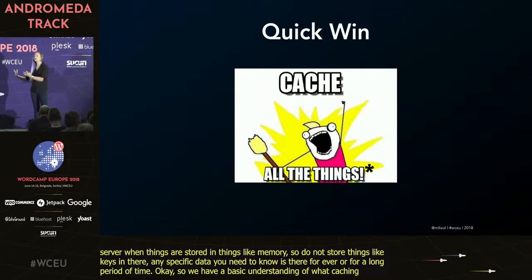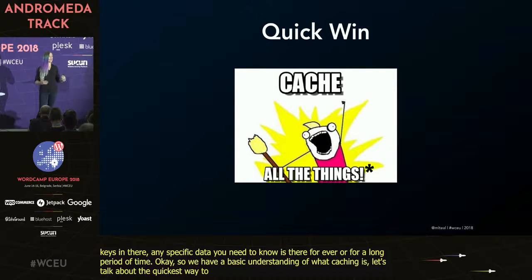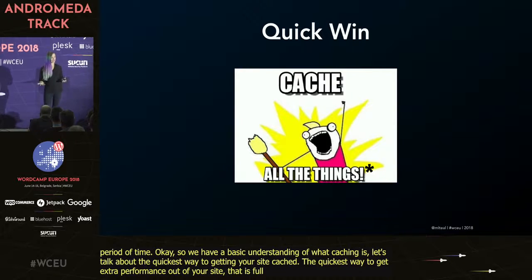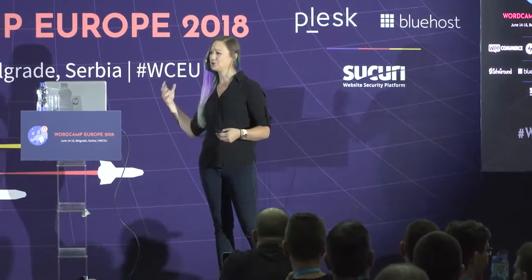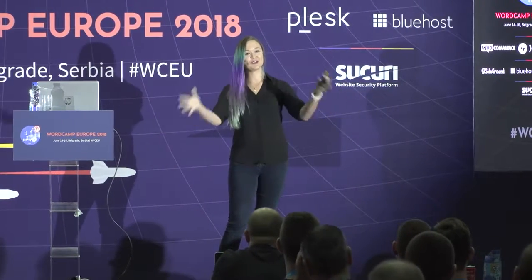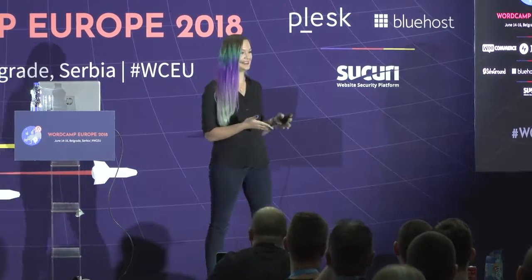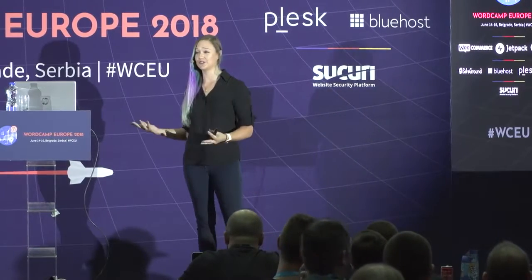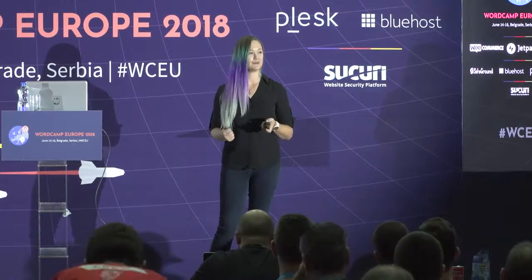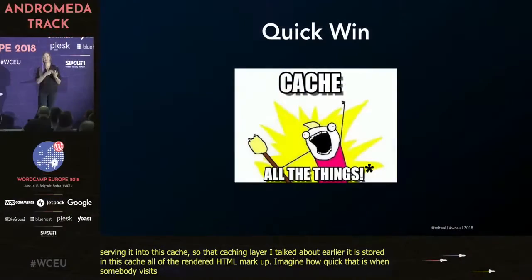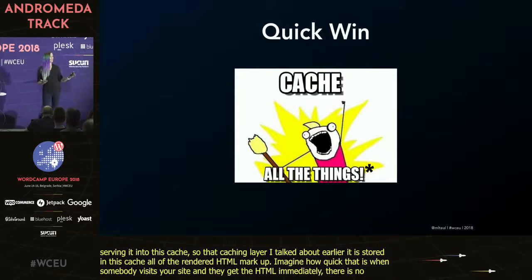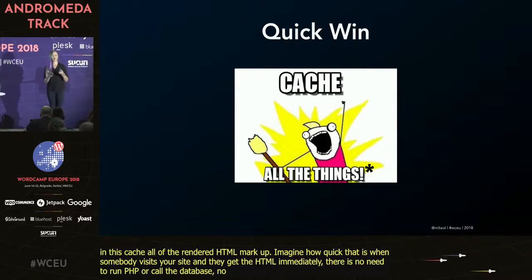Let's talk about the quickest way to getting your site cached — the quickest way to get some extra performance. That is full page caching. A lot of WordPress hosts take advantage of this. It's a fantastic way to get a super quick response if you've got a static WordPress site, where you are basically taking the full HTML output of a page and saving it into the cache. Imagine how quick that is when someone visits your site and they get the HTML immediately — there's no need to run PHP, no need to call the database, no need to make any extra API calls.